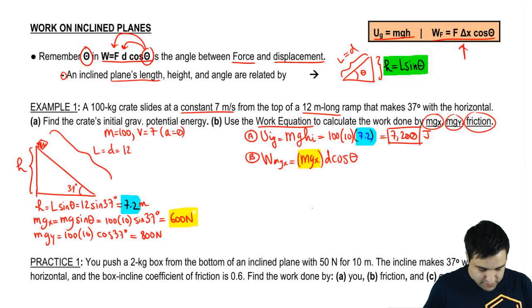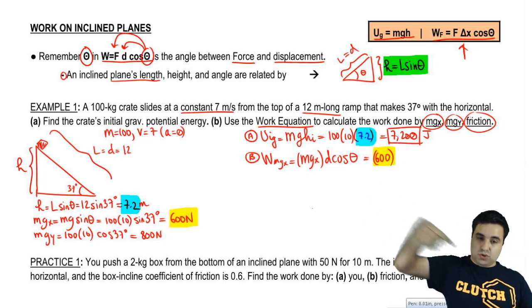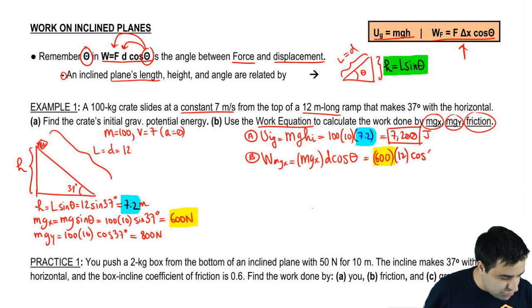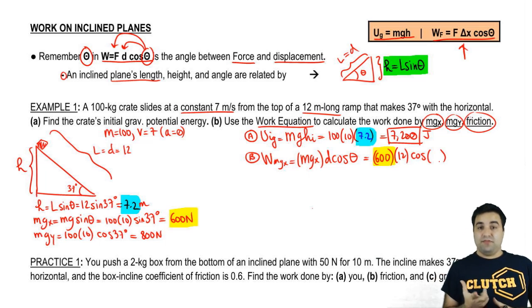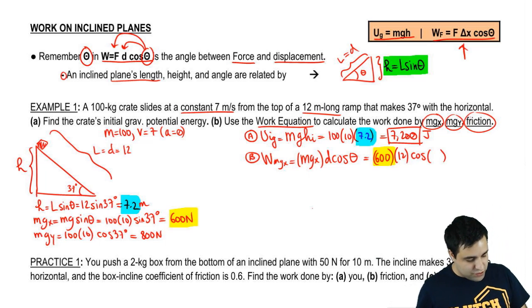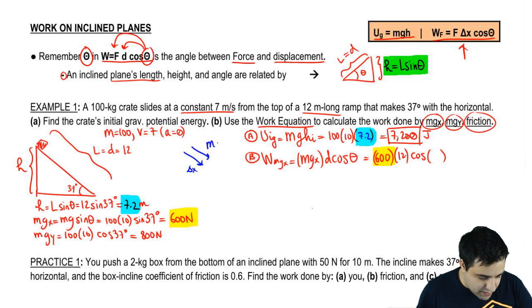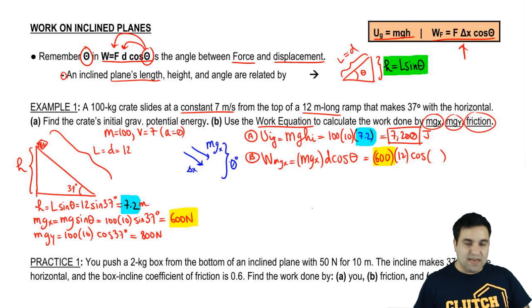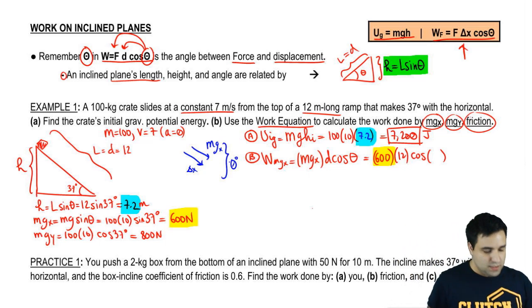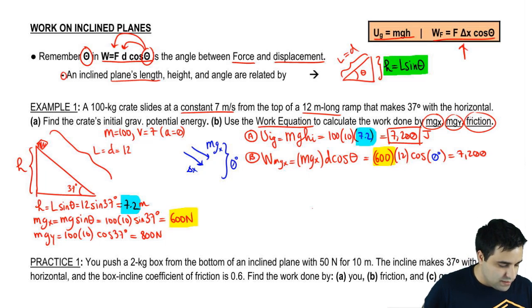So MGX is this number right here, so 600 goes right here. What is the distance? Well, the distance you moved was 12. And what is the angle? The angle is the tricky one. Some people might have thought that was 37. It's not. It's the whole purpose for the existence of this question, is to make the point that it's not that angle. Check it out. You are moving this way, and MGX is this way. Those two are parallel to each other, which means they make an angle of zero degrees with each other. So this is the cosine of zero.